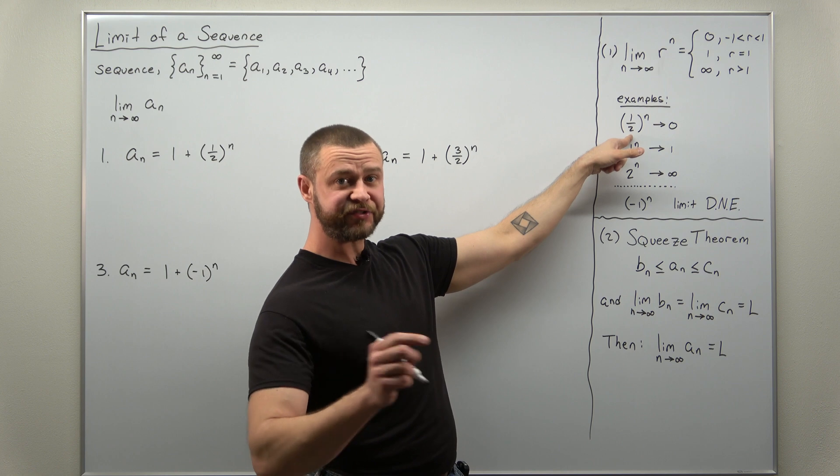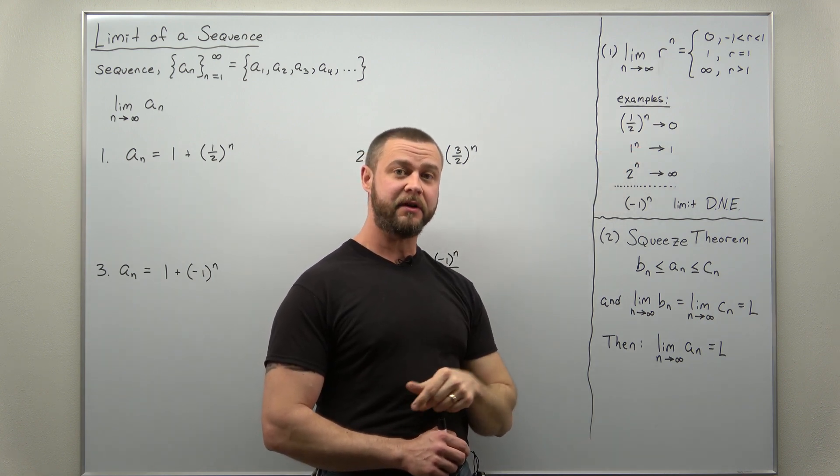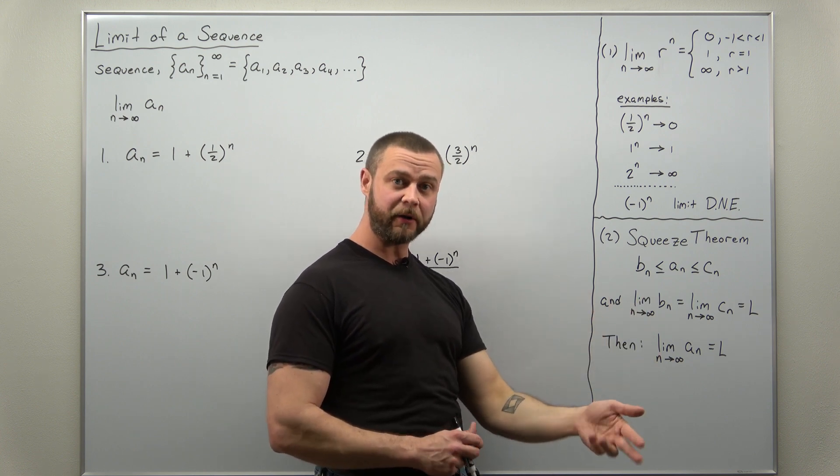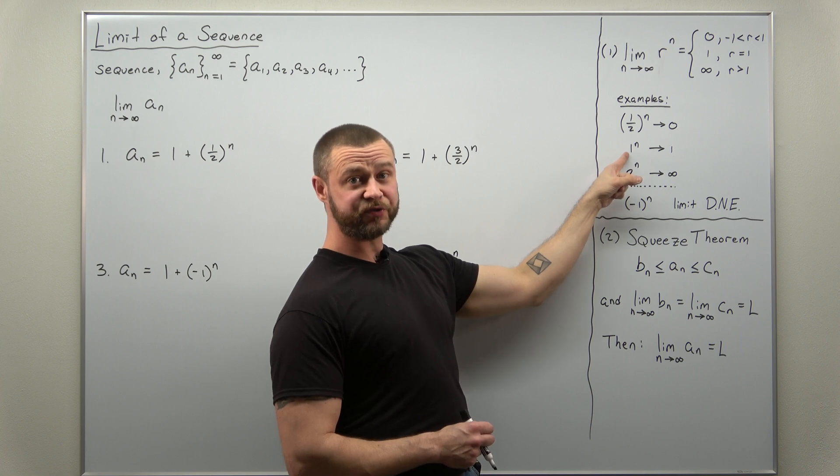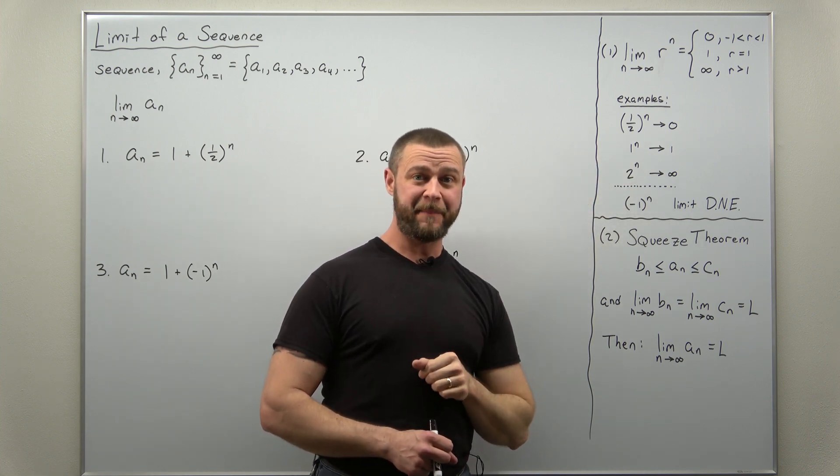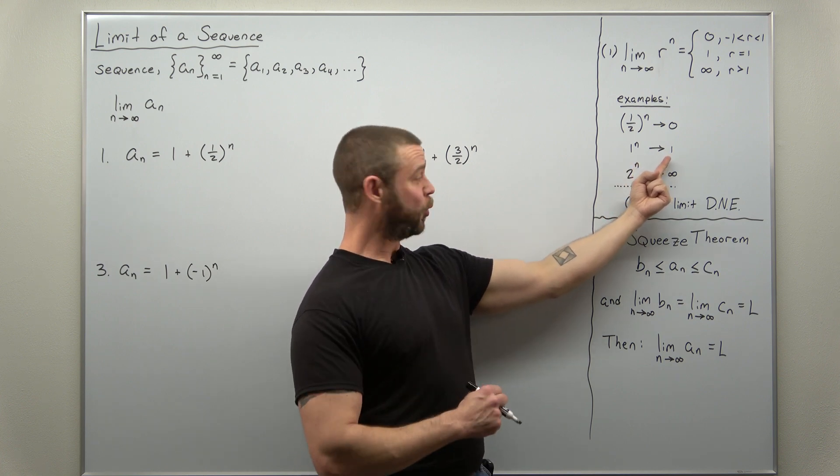If r is less than one, like r equals a half, think of what happens as you take powers of a half. It keeps getting smaller and smaller, eventually approaching zero. If r equals one, one to any power is one. So r to the n in the case of r equals one just approaches one.